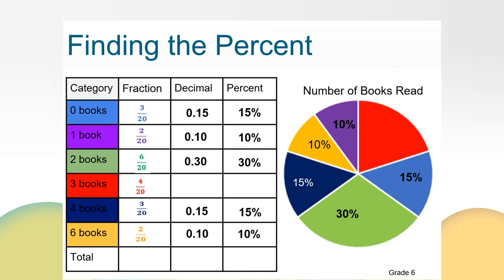Now that I have accounted for all the parts of my circle graph, let's make sure it adds up to 1 whole or 100%. If I add the fractions, I have 20/20ths. If I find the sum of all of the decimals, I have 1 whole, 1.00. And the sum of the percents is 100%. This means I have represented 100% of the class that was surveyed.